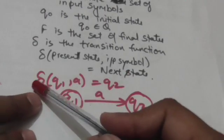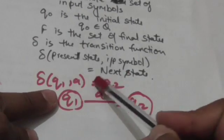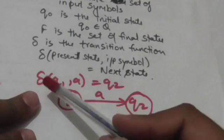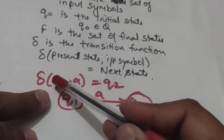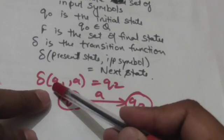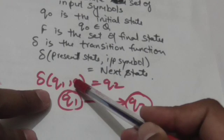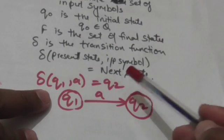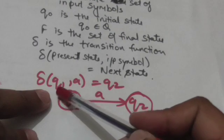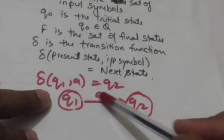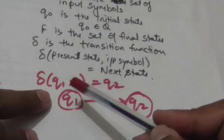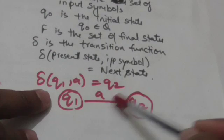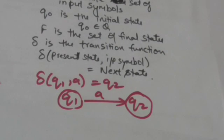δ(Q1, A) = Q2. It means when the present state of machine is Q1 and it reads input symbol A, then its next state will be Q2.